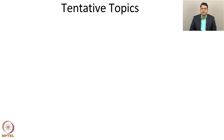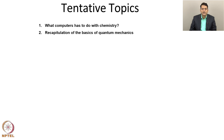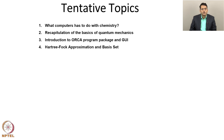The tentative topics we are going to cover in this course: first, we are going to understand what computers have to do with chemistry, because chemistry is mostly done in laboratories. In this course, we are going to use computers to solve quantum mechanics. We will recapitulate the basics of quantum mechanics, and then proceed to the ORCA program package, which we will use for this course, along with the graphical user interface. We will teach you how to install this on your laptop. We are also going to learn about the Hartree-Fock approximation, which is the basis of most sophisticated molecular quantum chemistry calculations, and we are going to learn about basis sets.